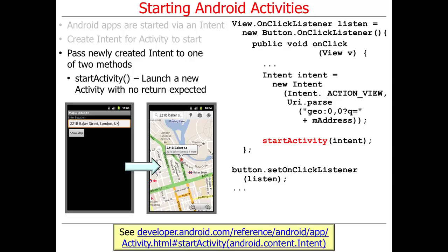The first way to start an activity — the easiest — is startActivity. It resolves and launches the appropriate activity corresponding to the intent. In this case, it creates a URL with a geo tag and uses it to start an activity that displays a map. Notice that in this case, no result is being passed back from the secondary activity to the primary. The primary activity just starts things up, gets the address, launches the map, and when you're done, you hit back.